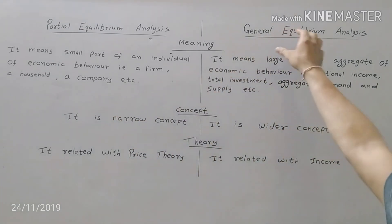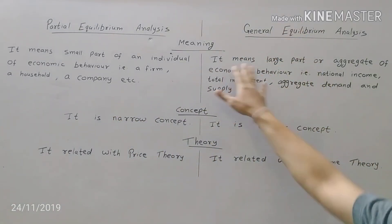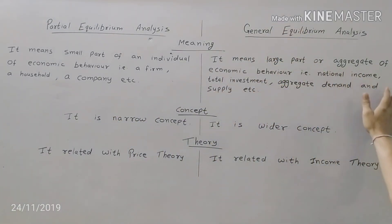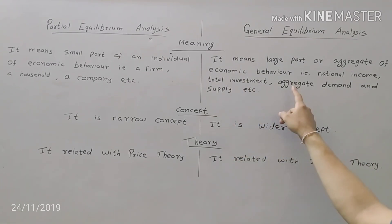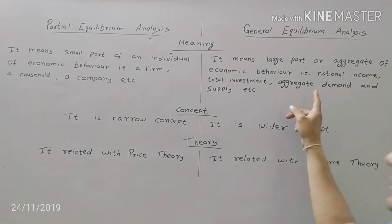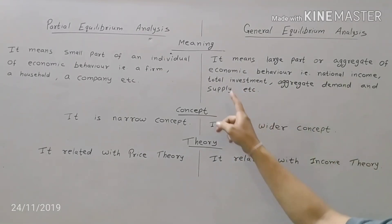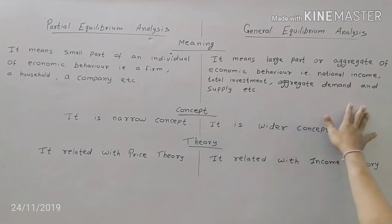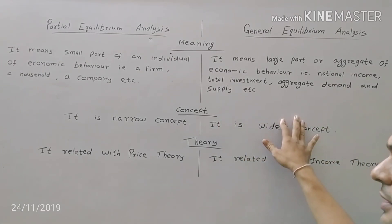And in general, it means large part or aggregate of economic behaviour — that is national income, total investment, aggregate demand and supply, etc.